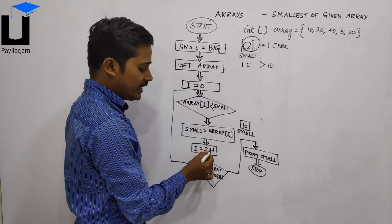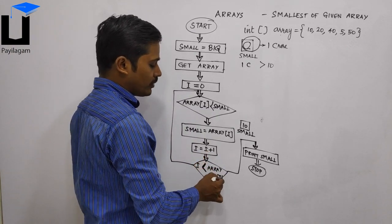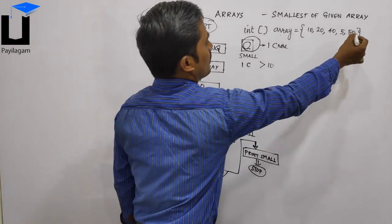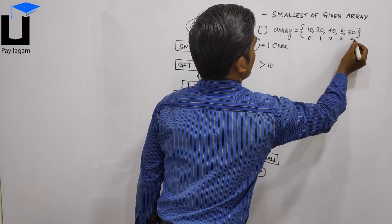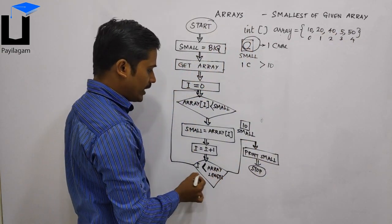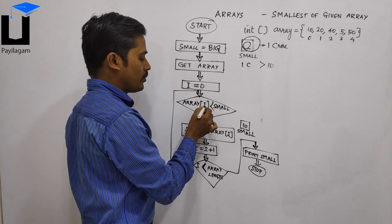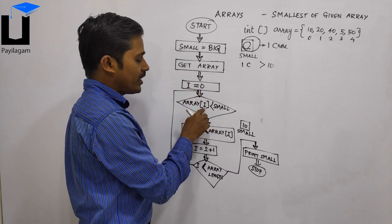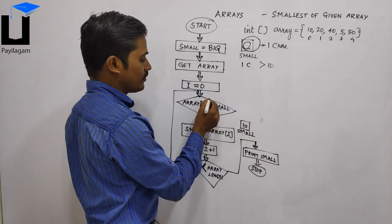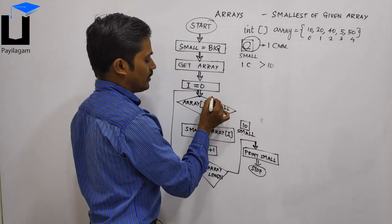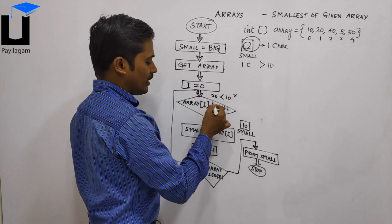Now I'm doing the increment of i. The loop starts at index 0. Now i value is 1. Array[1] is 20. Small is 10. Is 20 less than 10? No.